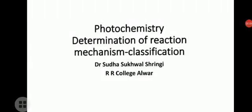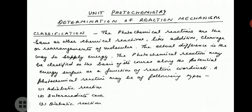Welcome students. Today we will study MSC final chemistry unit photochemistry: determination of reaction mechanism and classification. The photochemical reaction mechanism is not identical to the thermal reaction mechanism, because in thermal reactions the absorption of energy is continuous, while in photochemical reactions energy is supplied in a single installment. The methods used for determination of photochemical reaction mechanism are largely the same used for organic reaction mechanism determination: product identification, isotope tracing, detection and trapping of intermediates, and study of stereochemistry and kinetics.